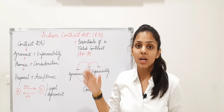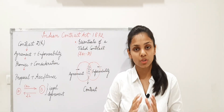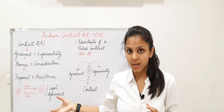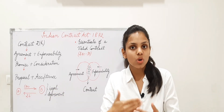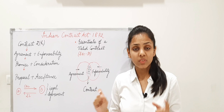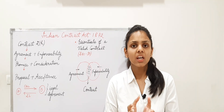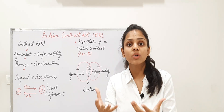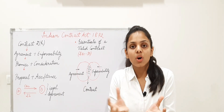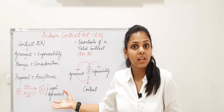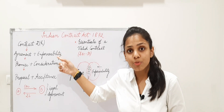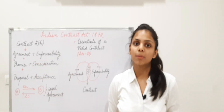Additionally, there must be a lawful consideration and a lawful object. For example, you must not enter into a smuggling contract — that object is illegal and unlawful. If the consideration or object is illegal, the agreement is unenforceable and will only remain an agreement — it will never become a contract. So the consideration and object must both be lawful.